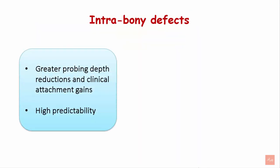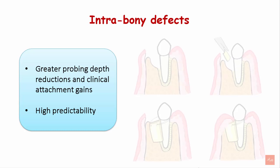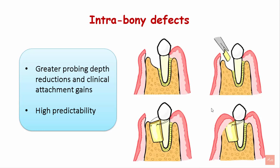In case of intra-bony defects, greater probing depth reduction is achieved and clinical attachment gains are seen. These procedures are highly predictable. In this image you can see an intra-bony defect is completely debrided, a guided tissue regeneration membrane is adapted onto the defect and sutured properly, after which a coronally advanced flap is closed.